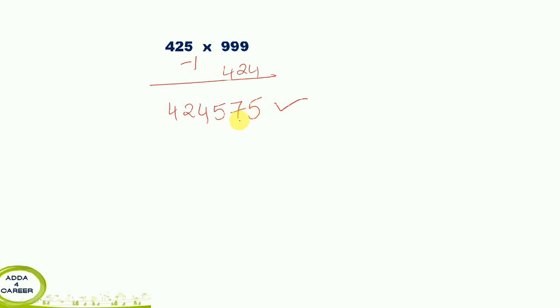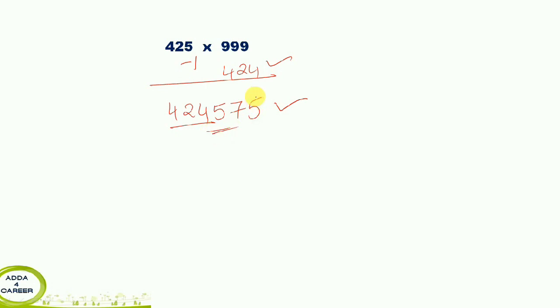The complement of 424 is 575. So the answer is 424575. This is how we get 424 followed by 575.